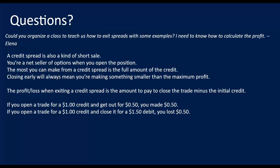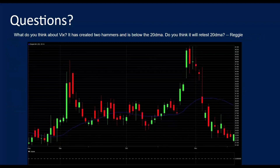Determining the profit and losses can get weird with credit spreads because you get a credit upfront but you still have some at-risk amount that's implied rather than explicit. If I buy a stock for $20, I know I have risked $20. If I sell some options and I get a dollar back, it can be harder to determine how much I have at risk. Typically what you have at risk in a credit spread is the width of the strikes minus that credit. So if it's $5 between strike prices and you got a credit upfront of a dollar, you have $4 at risk. To determine the profit and loss when exiting a credit spread early, it's essentially the amount you pay to close the trade minus that initial credit. If you open a trade for a $1 credit and get out for 50 cents, you made 50 cents.